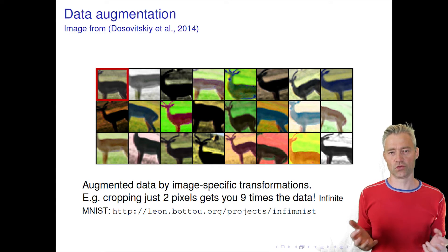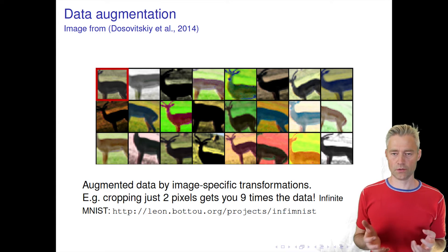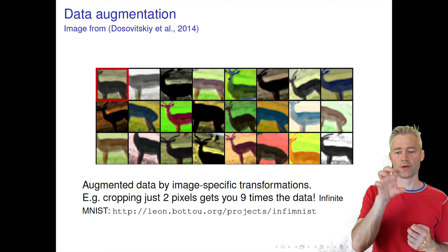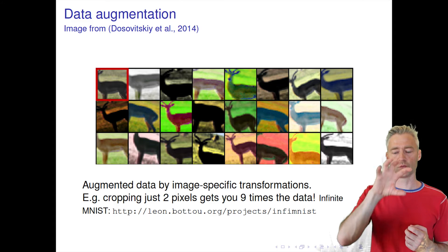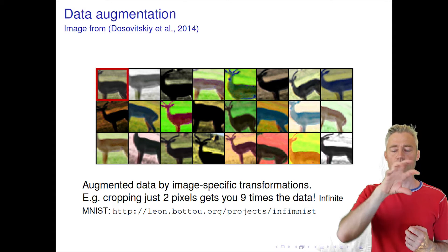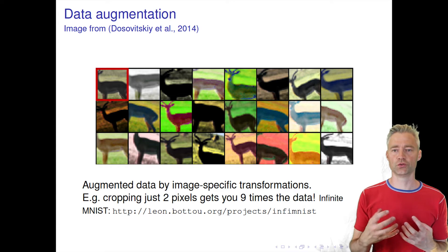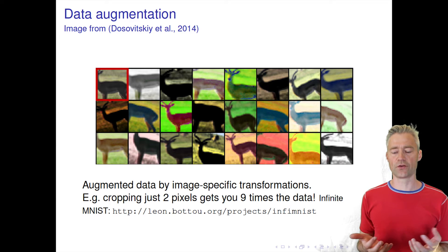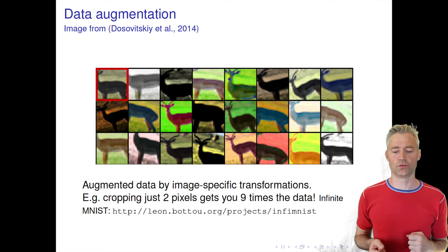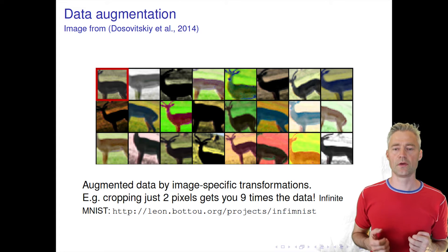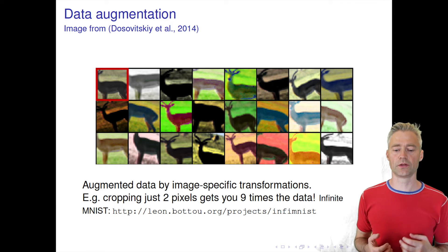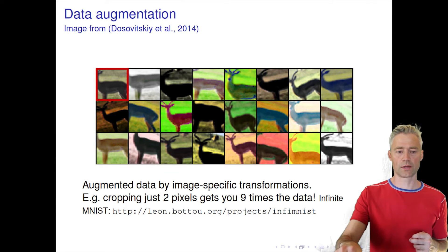This is something we can do in many image applications where we as humans know the invariances of images. We can crop the image at different places or tilt the image by some degrees, and all of this will produce images that should belong to the same class. Of course, there are many problems where we don't know the invariances and then we cannot do this, but when you see the record numbers on MNIST or ImageNet, they are all done with this type of data augmentation.